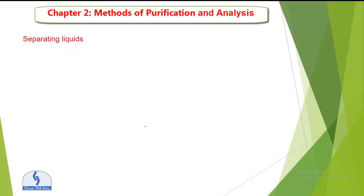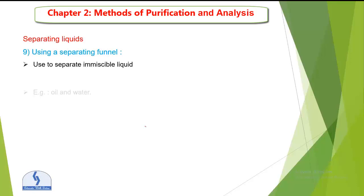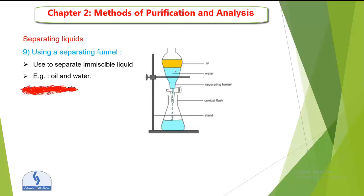Next is separating liquids. One method uses a separating funnel to separate immiscible liquids — liquids that will not mix with each other. Example: oil and water. Oil and water are immiscible. You can try it at home — oil sits at the upper level and does not mix with water, so you can easily separate them using a separating funnel.